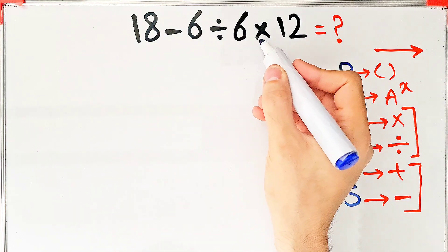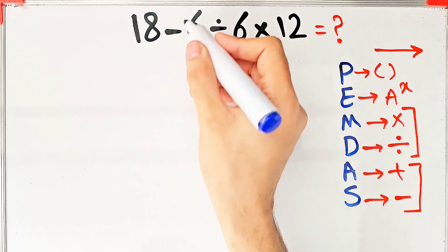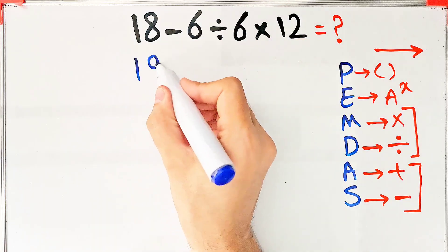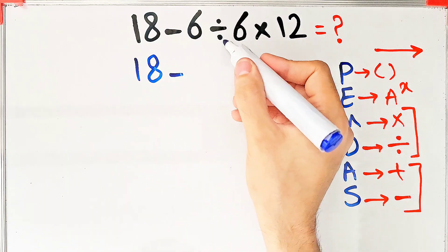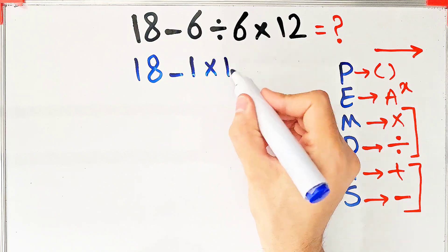First, we do this division. Negative 6 divided by 6 equals negative 1. We have 18 minus 1 then times 12.